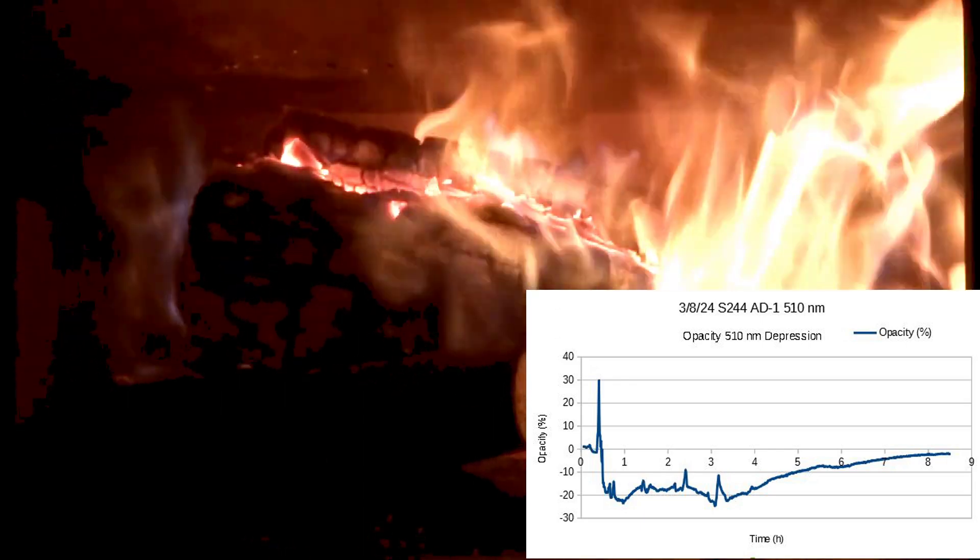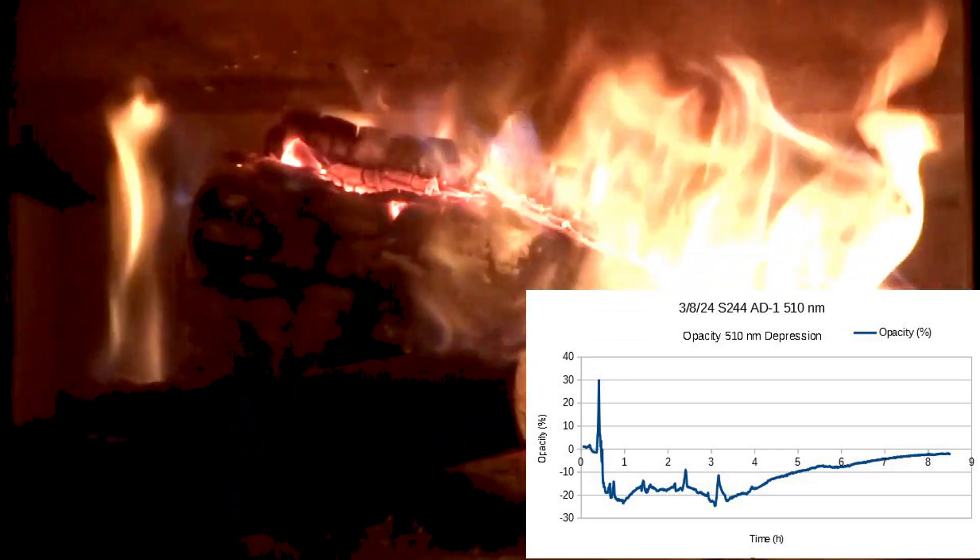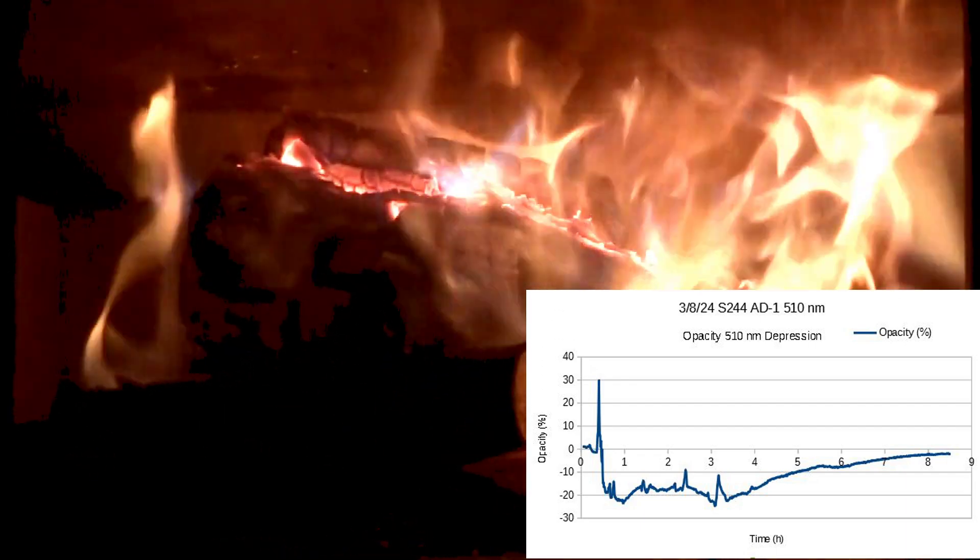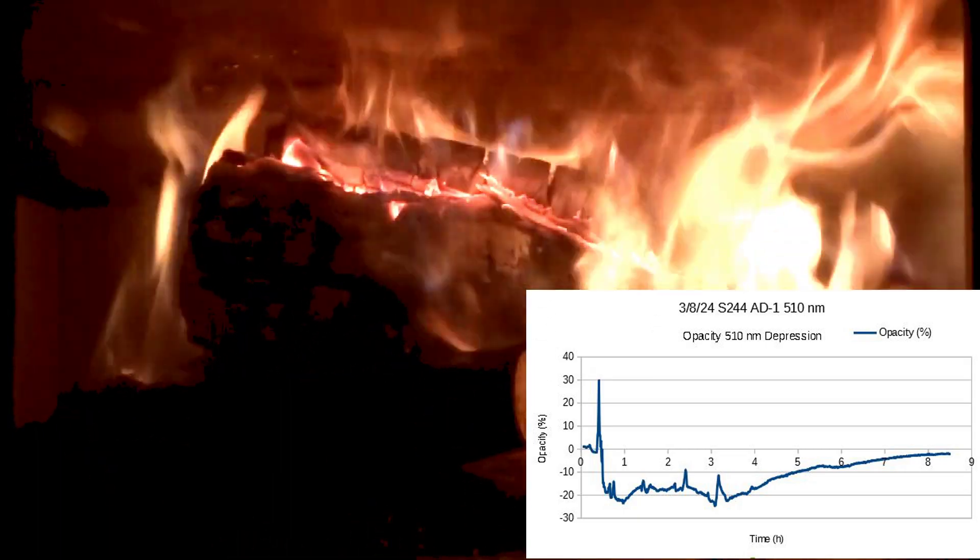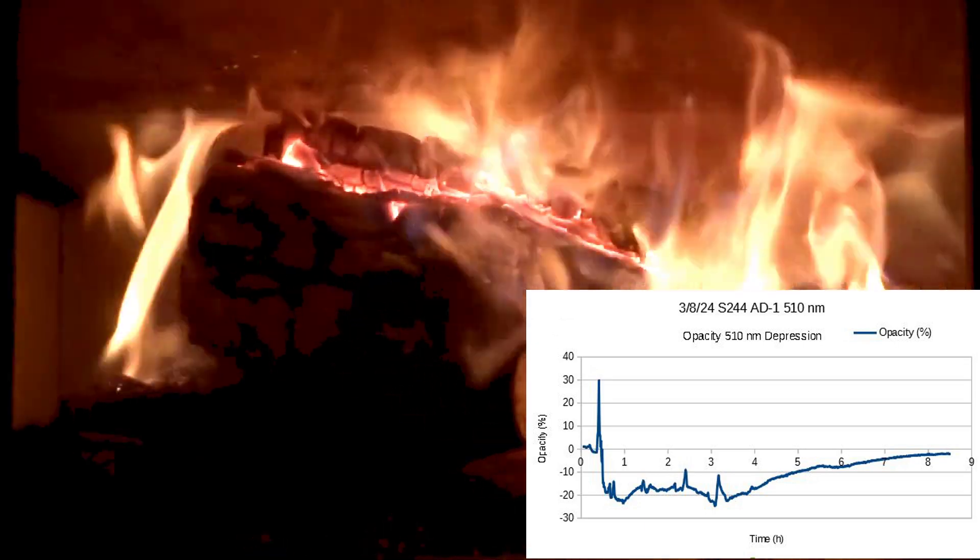The 510 nanometer light source presented opacity depression for much of the run. At one time I thought this was an error in my system, but you can see in later graphs that other light sources do not have opacity depression.